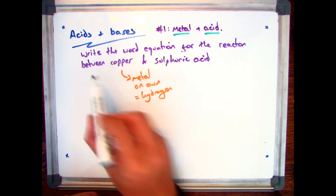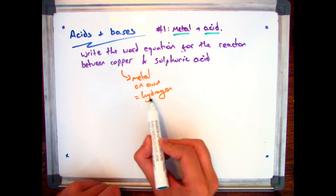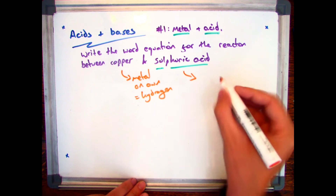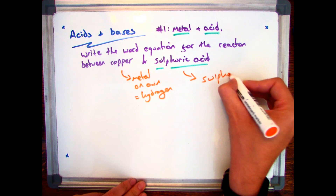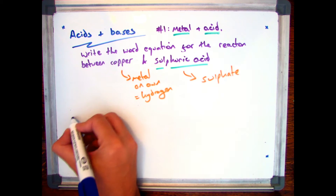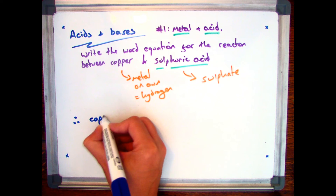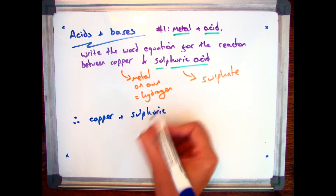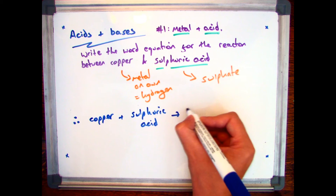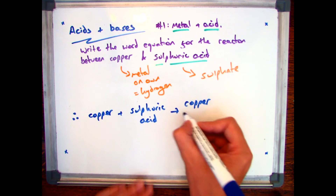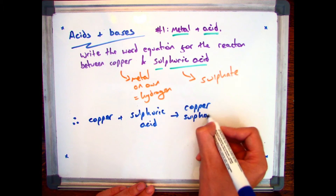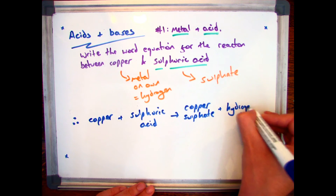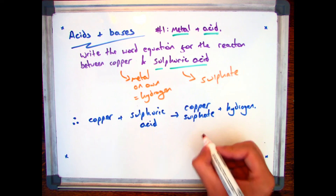For a final example, I'm going to have copper and sulfuric acid. Again, I've got a metal on its own, but this time I've got sulfuric acid, so my salt ending is sulfate — S-U-L-P-H-A-T-E. So the word equation is copper plus sulfuric acid, which gives us copper sulfate and hydrogen. One mark for copper sulfate and one mark for hydrogen.